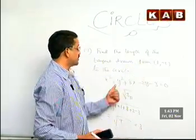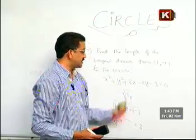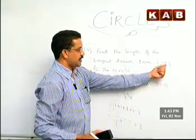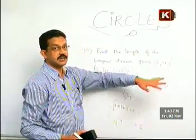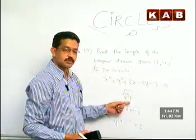This is our 17th question. Find the length of the tangent drawn from the external point (1, -1). I already told you, (1, -1) is an external point. That is why S11 is positive. You have a length.